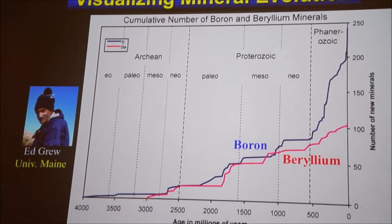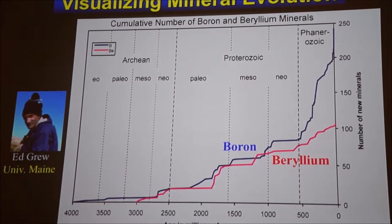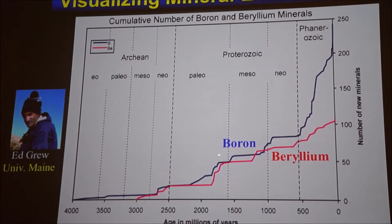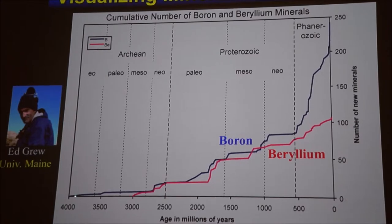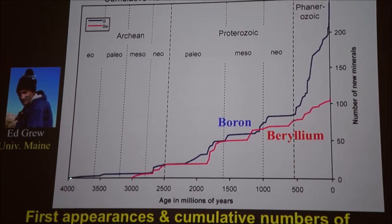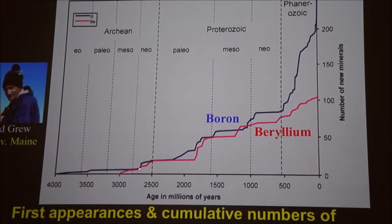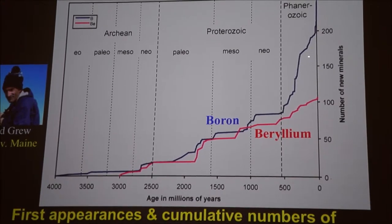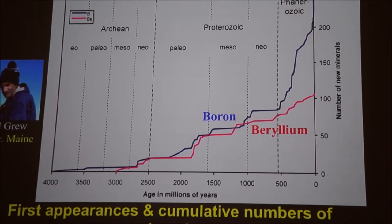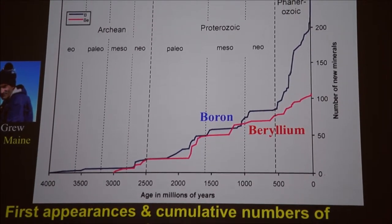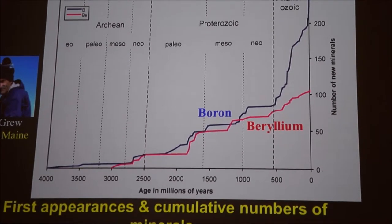That brings us to various ways of visualizing mineral evolution. One of the most basic things we can do is show the first appearance of boron and beryllium minerals, work pioneered by Ed Grew. You can see the very first boron mineral appears about 4 billion years ago, tourmaline. The very first beryllium mineral about 3 billion years ago, that's beryl. And then you see the cumulative number of minerals. One of the things to point out here is all indications are that early in Earth history, there were very few mineral species. It takes a long time to process the near-surface environment sufficiently to get these specialized minerals.